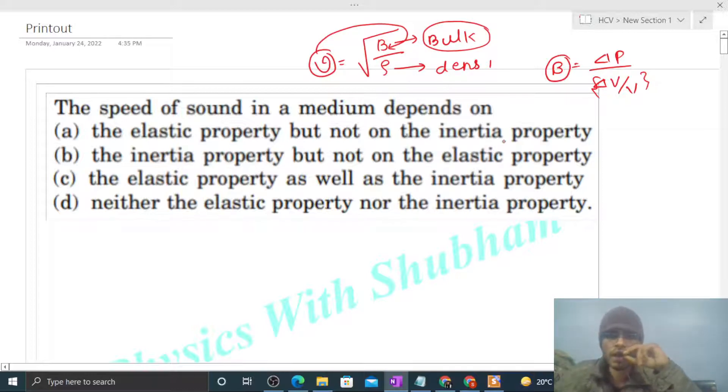Now, the inertial property - what is this density? Density is simply mass per unit volume, and mass represents inertia to some extent. Higher mass represents higher inertia, so we can say density represents inertial property.